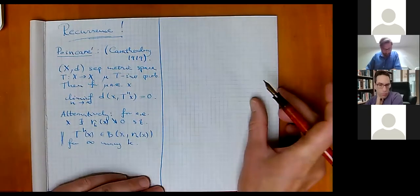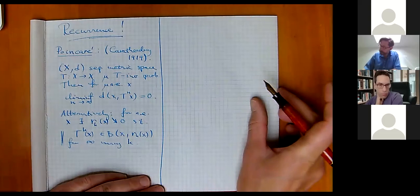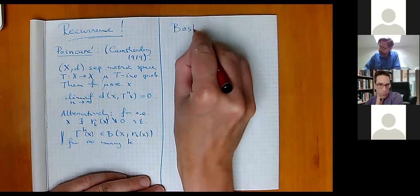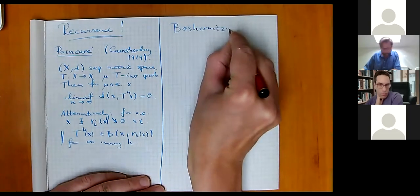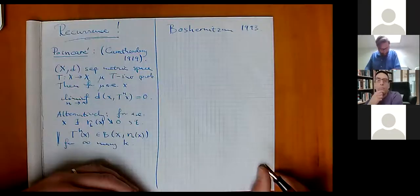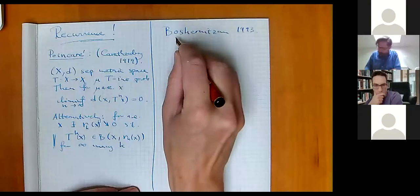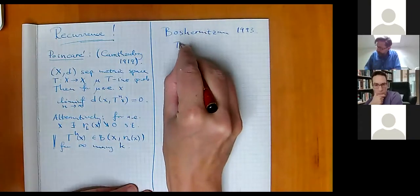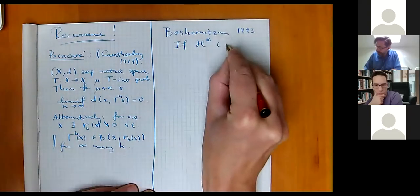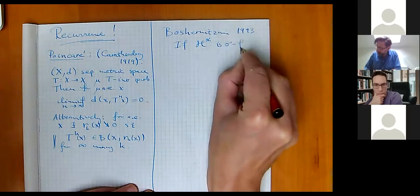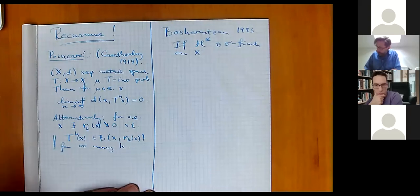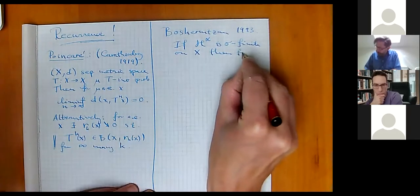From 1919 up to more modern times, there was not much improvement on this, but there is another result which you could call classical — it's by Boshernitzan, from 1993. He assumes a little bit more: if we look at the alpha-dimensional Hausdorff measure, and if this is sigma-finite on this separable metric space X,